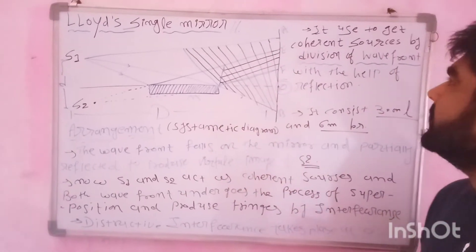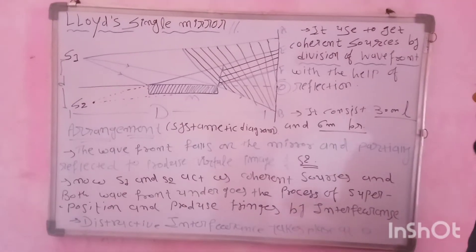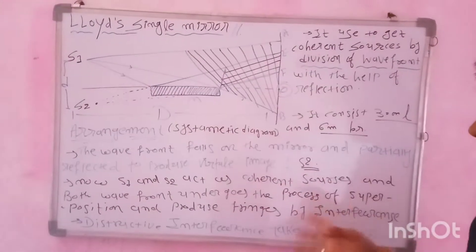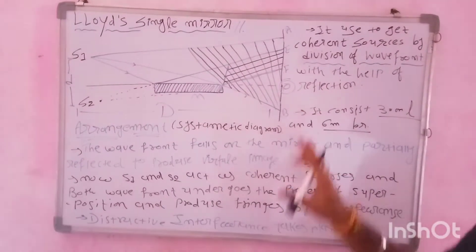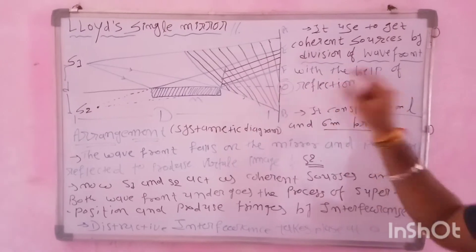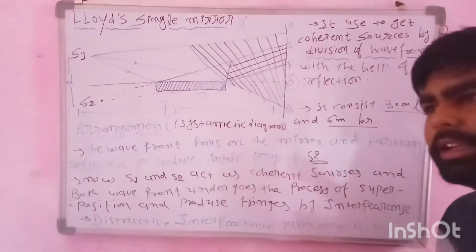It used to get the coherent sources by division of wave front with the help of reflection. Here is a portion of the division of wave front. For the interference produced, we have two tricks.